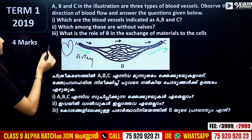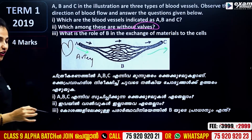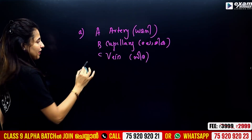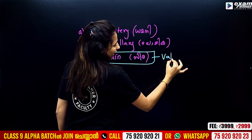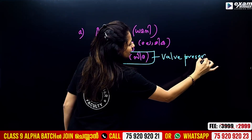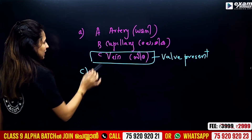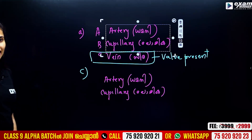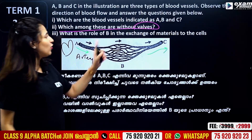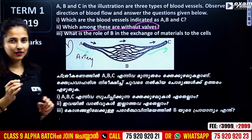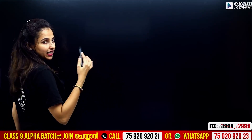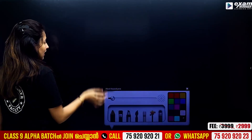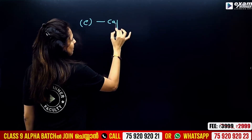Which among these are without valves? Among the blood vessels, A is the artery, B is the capillary, and C is the vein. What is the role of B in the exchange of materials? B in that case is the capillary.